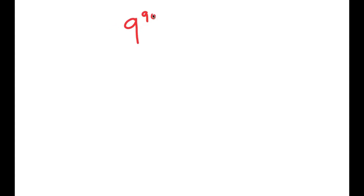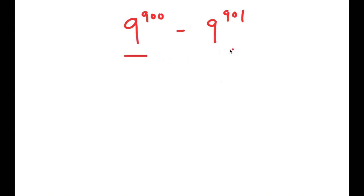In this video I'm going to be solving the problem 9 to the power of 900 minus 9 to the power of 901. To solve this I'm going to start by evaluating my terms. We have 9 to the power of 900 and 9 to the power of 901, and these two terms are pretty similar except that the exponent for 9 to the power of 900 is one less than the exponent for 9 to the power of 901.